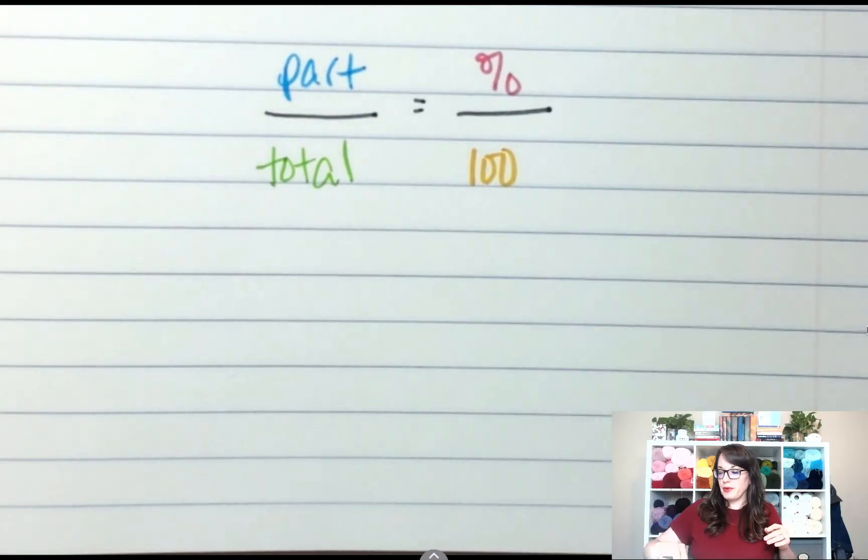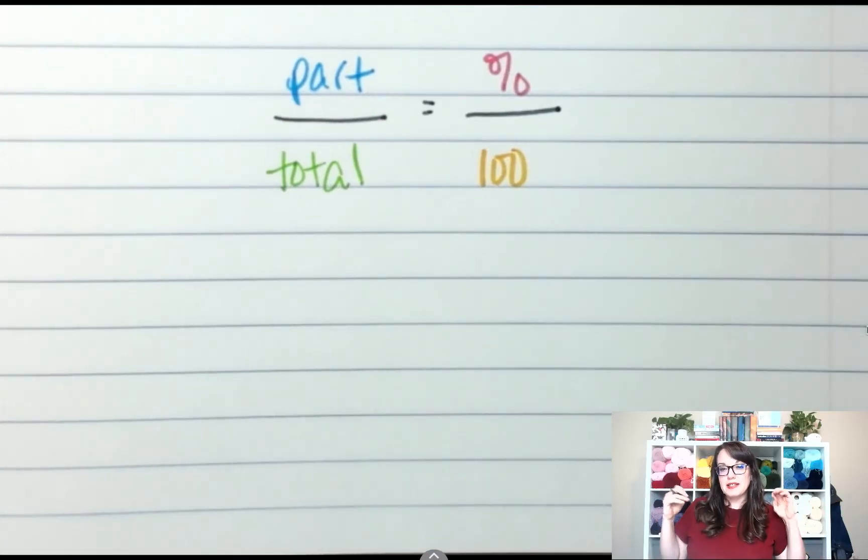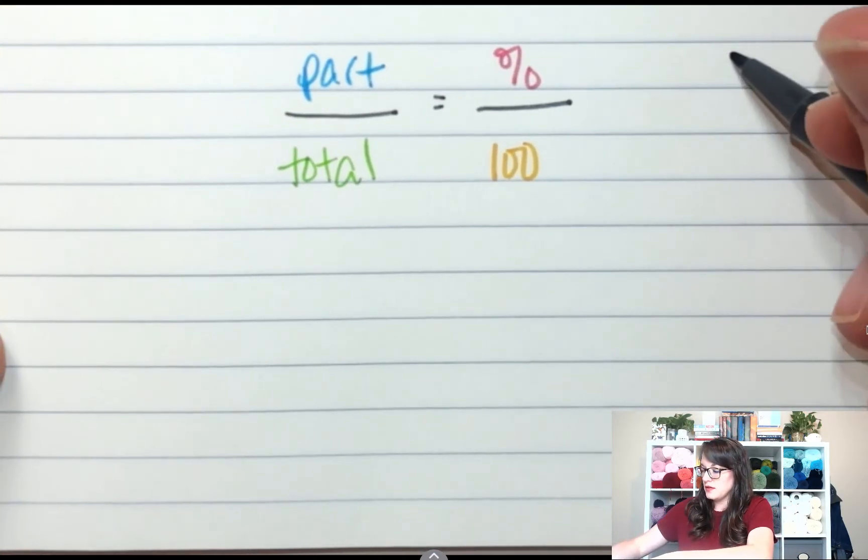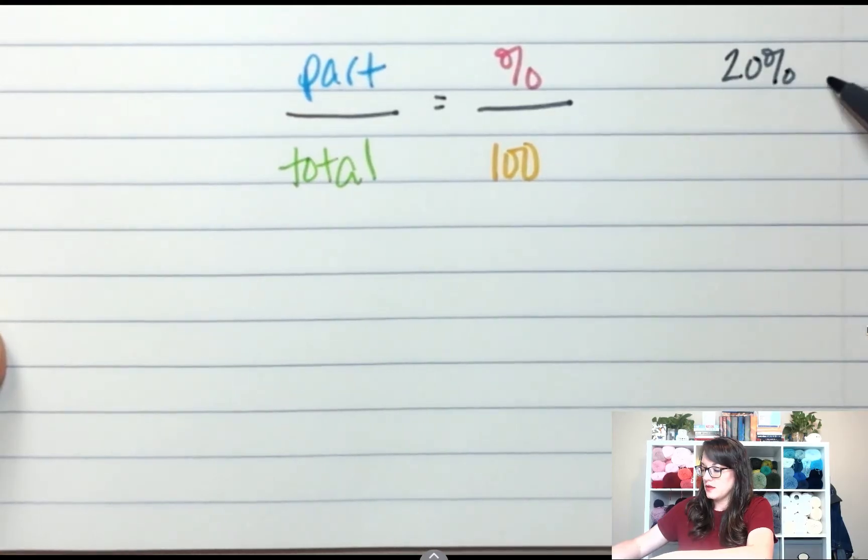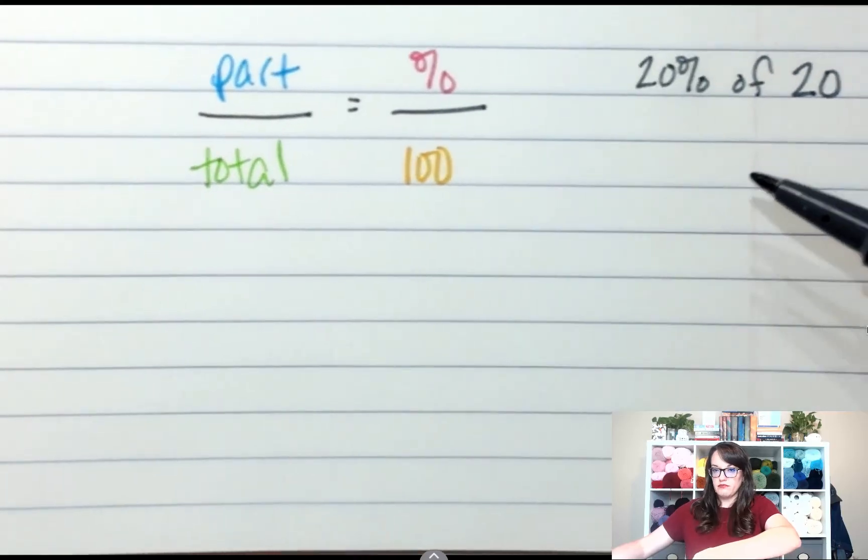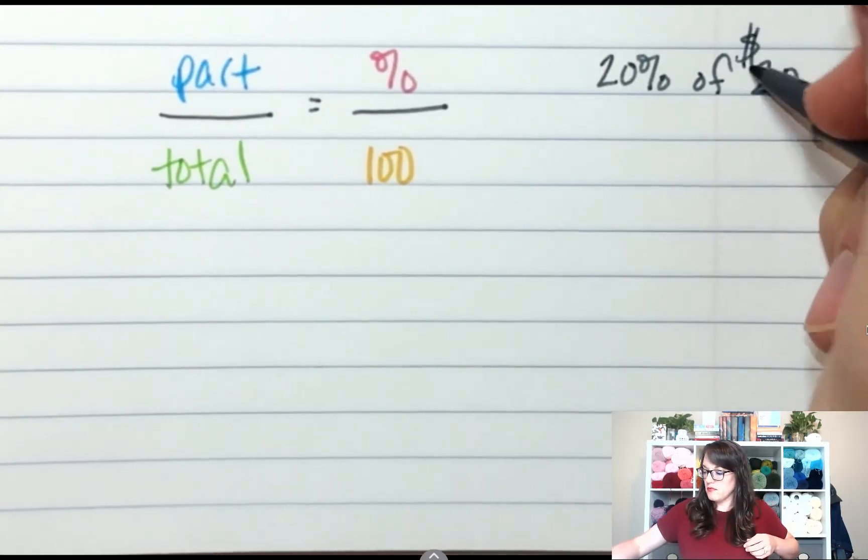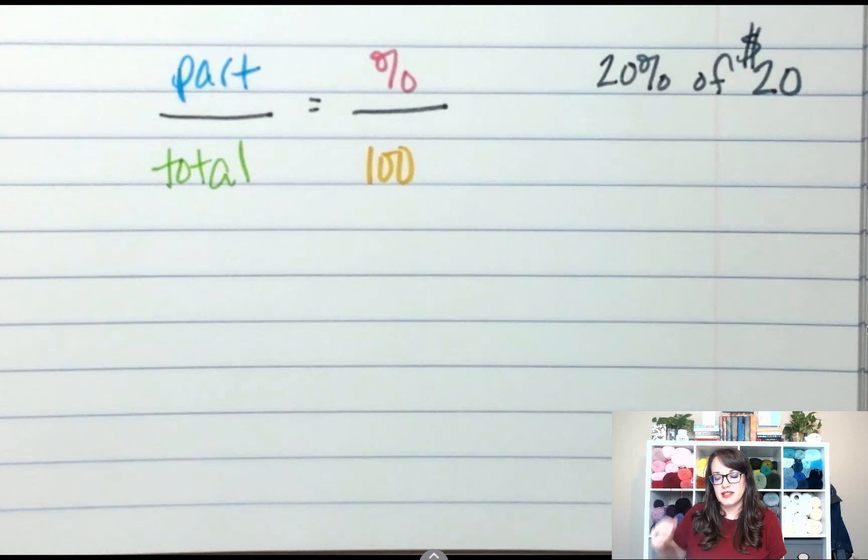Alright, let's do another example. Except this time, I'm going to tell you the percent. I need to find 20% of $20. I'm going to find 20% of $20 because I have a coupon, and I want to know what 20% off is.